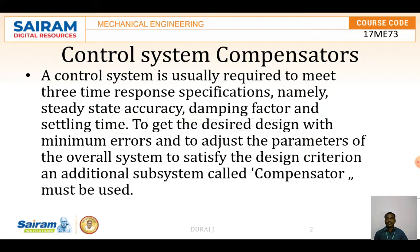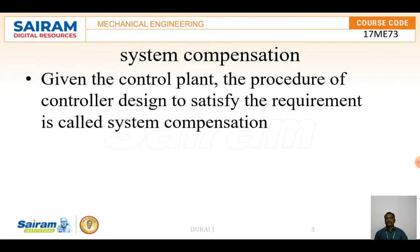A control system is usually required to meet three response specifications: steady state accuracy, damping factor, and settling time. To get the desired design with minimum errors and to adjust the parameters of the overall system to satisfy the design criterion, an additional subsystem called a compensator must be used. To increase the efficiency of the compensator, we add poles and zeros — adding poles increases accuracy, and adding zeros increases stability.